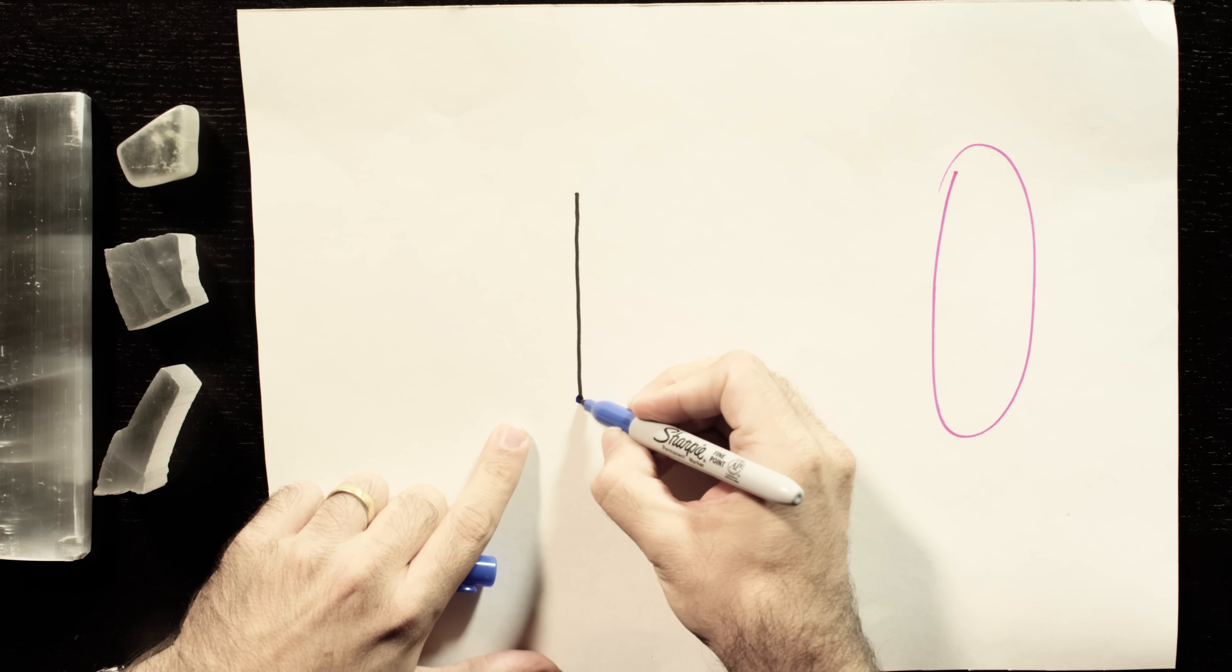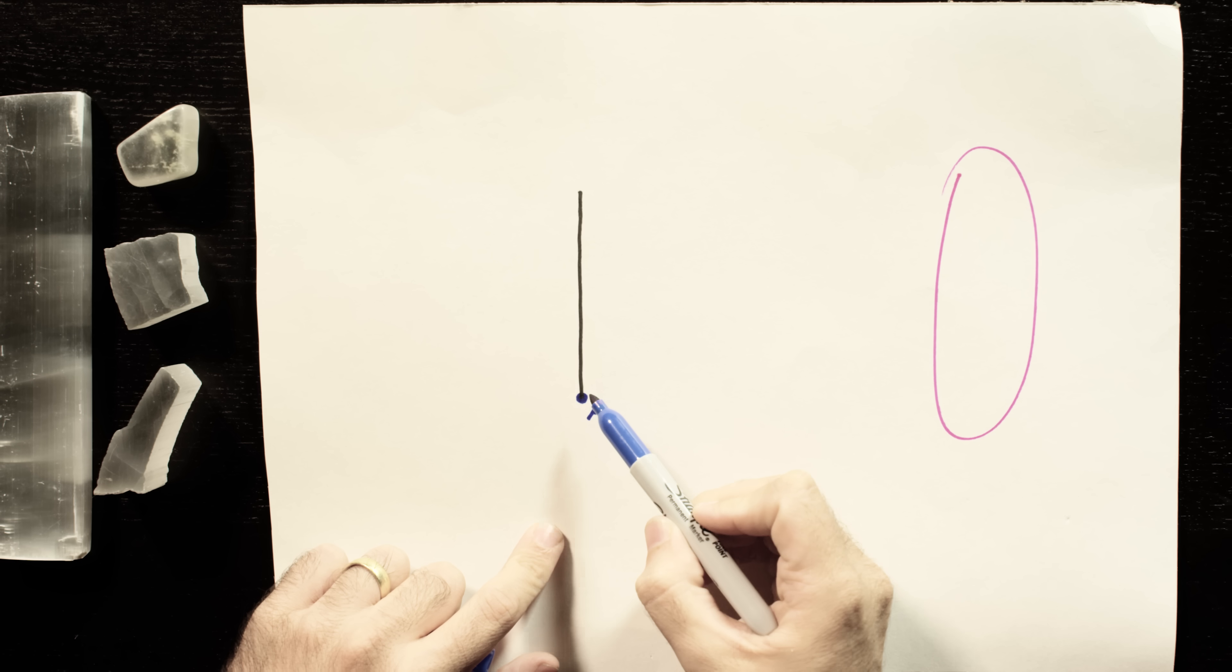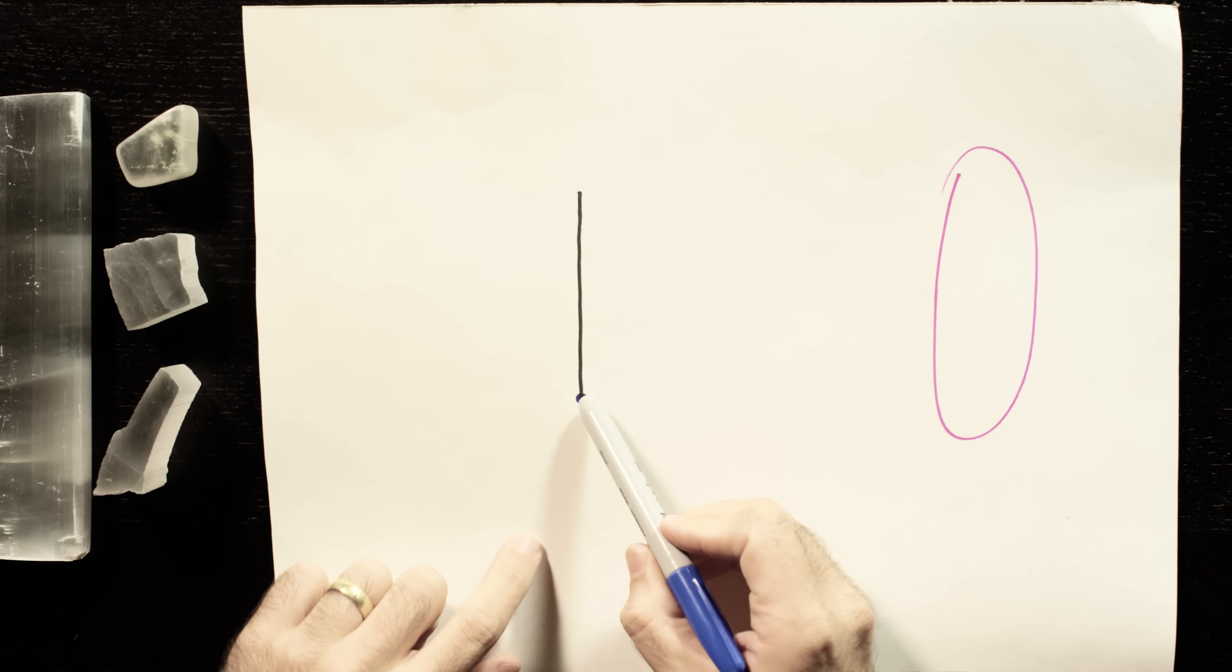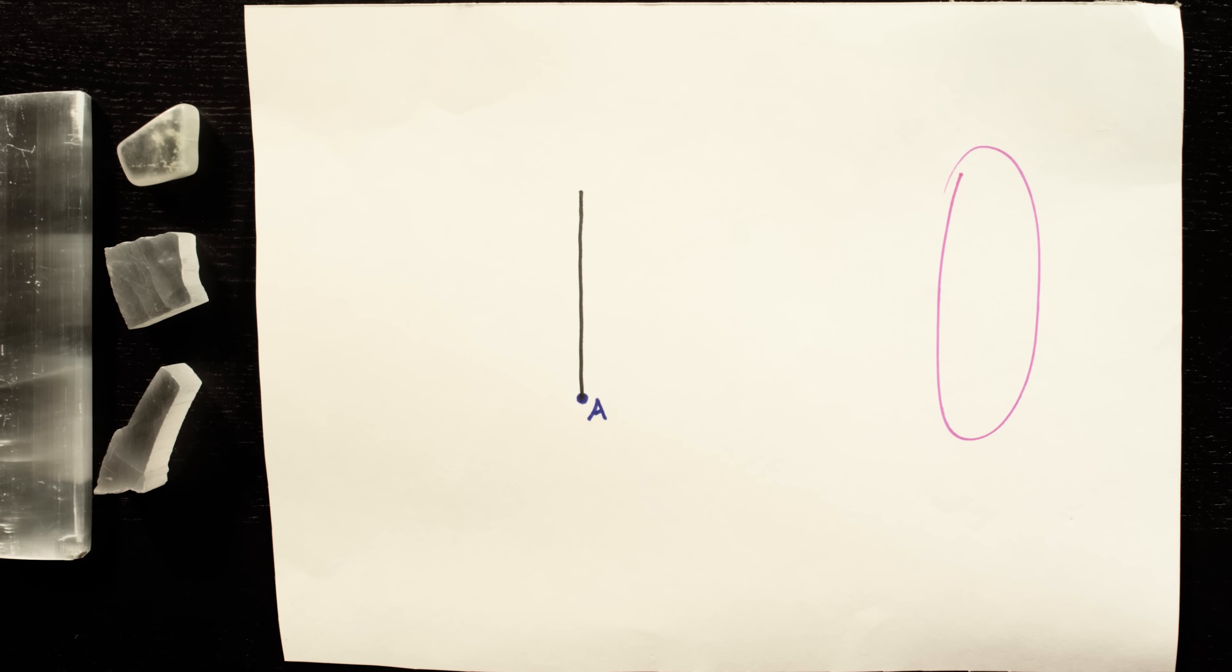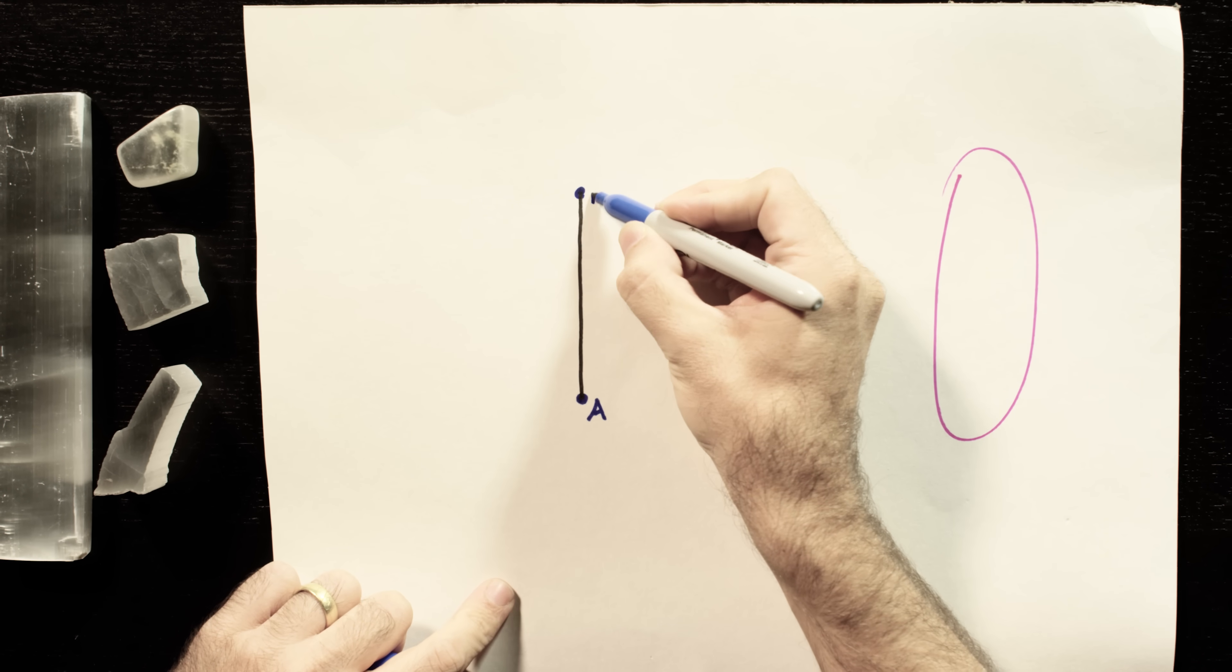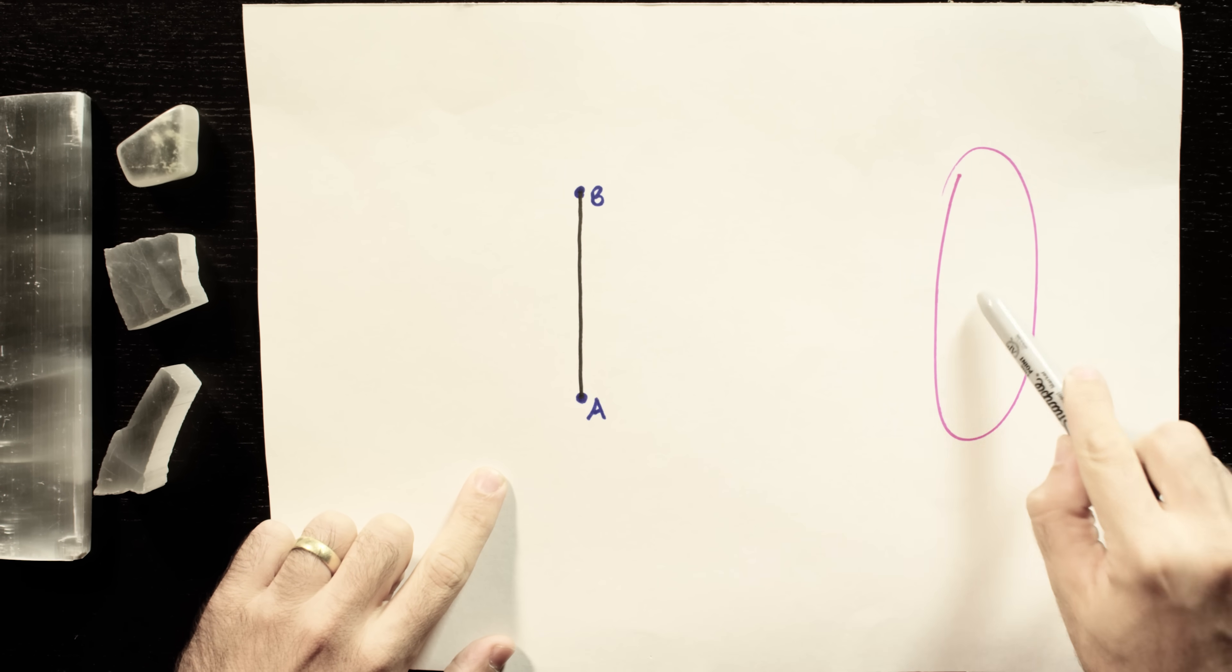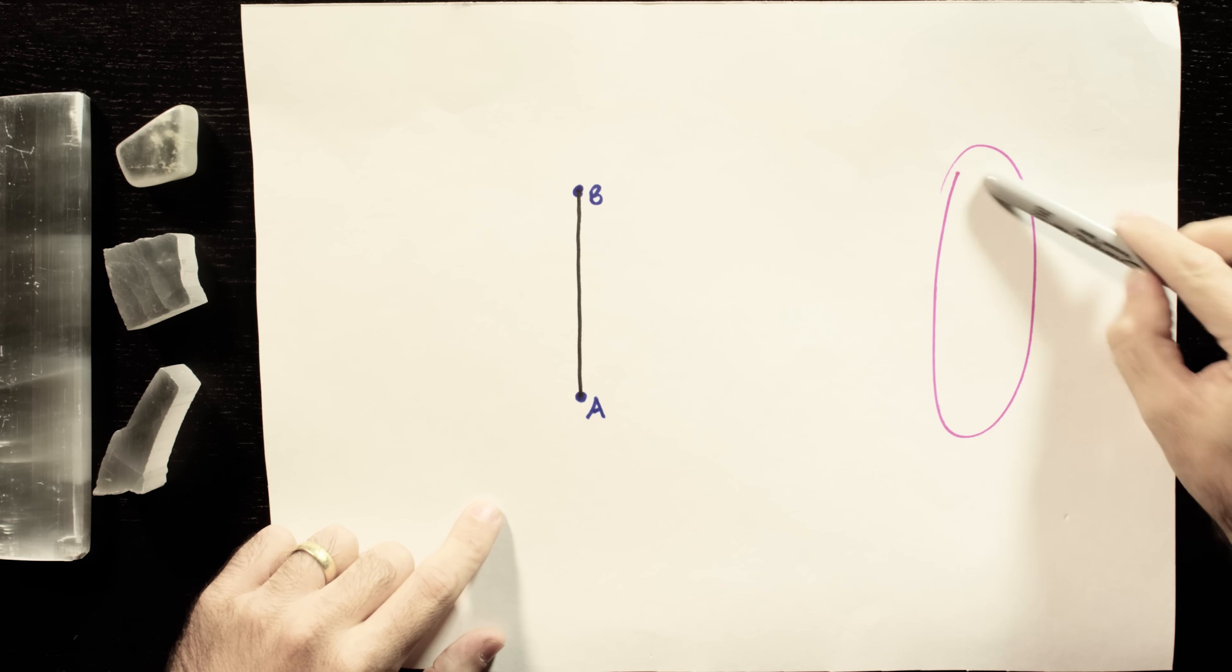Let's take a look at a point on the object like this one. I'll call it point A for bottom. Now, light is leaving point A in all directions. You can see it from anywhere. But here's the problem. Some of that light might land on the retina like here. But light from another point, like this one, I'll call this point B for top, might also fall in the exact same spot on the retina. So you wind up with this big blurry mess of light information that makes no sense.